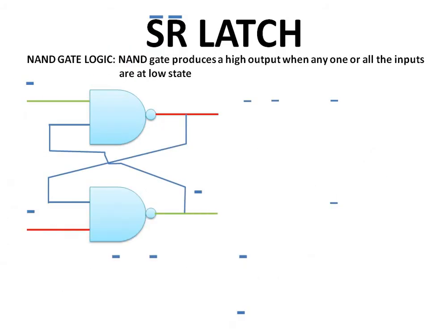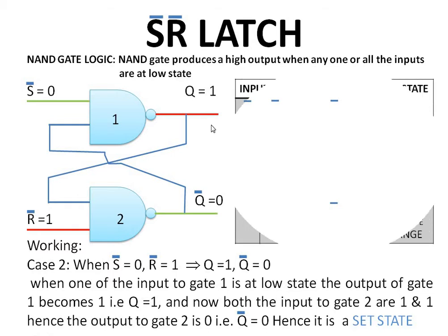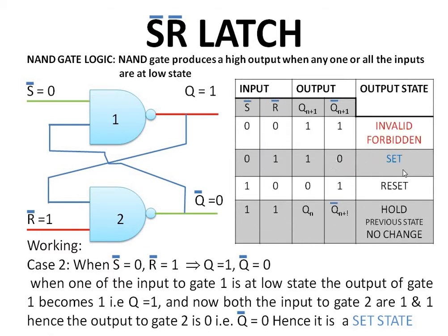Case two: when S̄ is equal to zero and R̄ is equal to one. We consider gate one, whose input is at low state, hence it produces a high output. This high output is fed back to gate two, making both inputs of gate two at high state, hence gate two produces a low output. That is, Q is equal to one and Q̄ is equal to zero. Since Q, the normal output, is at high state, this state is called the set state.